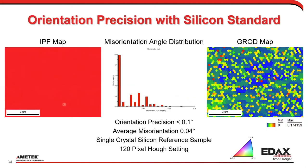Even at high speeds, precision is actually slightly better than Hikari because you have better pattern quality from not binning down. The Hough isn't averaging over a larger area. On a single crystal silicon IPF map, the misorientation distribution shows the vast majority below 0.1 degrees — average misorientation is 0.04 degrees. On a GRod map the maximum orientation spread is around 0.17 degrees, confirming high precision.